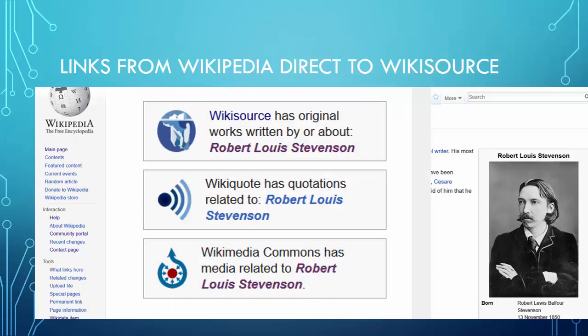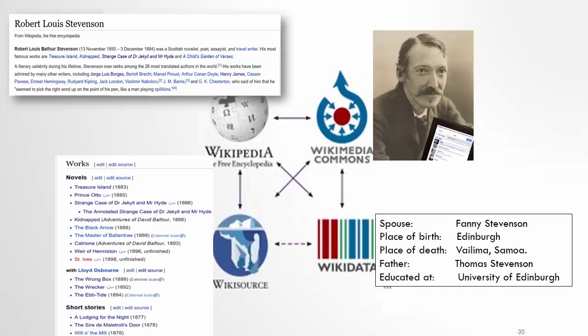We're also trying to think more holistically and link from Wikipedia to Wikisource. For Robert Louis Stevenson, we have links at the bottom of his Wikipedia page saying 'Wikisource has original works written by or about Robert Louis Stevenson.' Just one click away. If we think more holistically — not separating into silos — Wikimedia wants everything to be more integrated. You can't really separate a man from his works: his article on Wikipedia, his longer works on Wikisource, images on Wikimedia Commons, and data publicly in the public domain — such as place of birth, place of death — visualized in different ways on Wikidata.